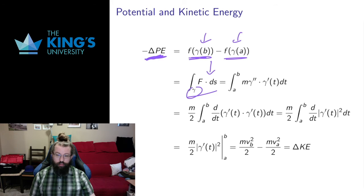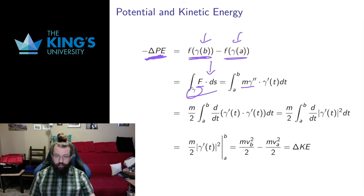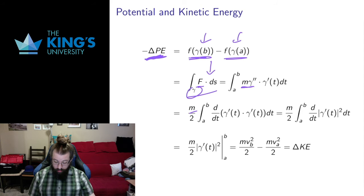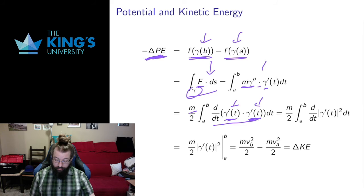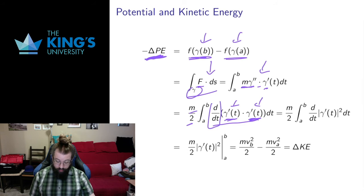Let me interpret the line integral in another way. Force equals mass times acceleration — that's Newton's law. We're dealing with conventional Newtonian physics, not quantum or relativistic issues. Replacing force with mass times acceleration, and noting that acceleration is the second derivative of position and position is the curve, I can take out the mass term as a constant. Then the second derivative dotted with the first derivative can be realized as the derivative of the quantity gamma-prime dotted with gamma-prime, because by the product rule I get exactly two copies of that term, so dividing by two gives me the derivative of that dot product.